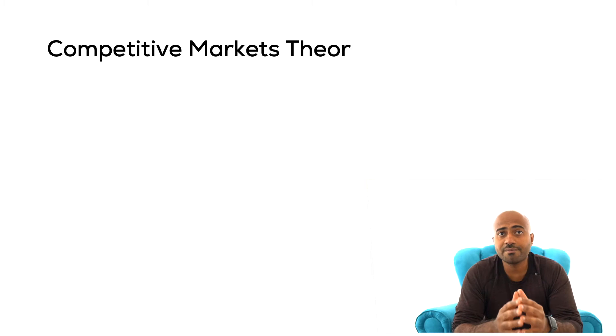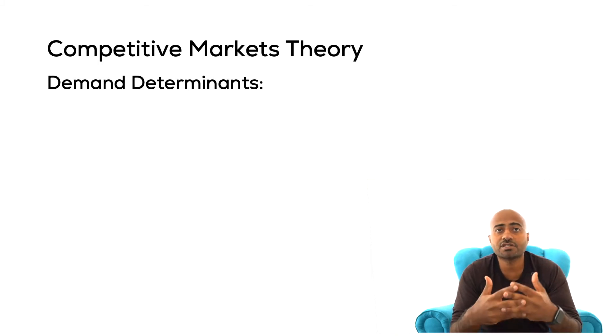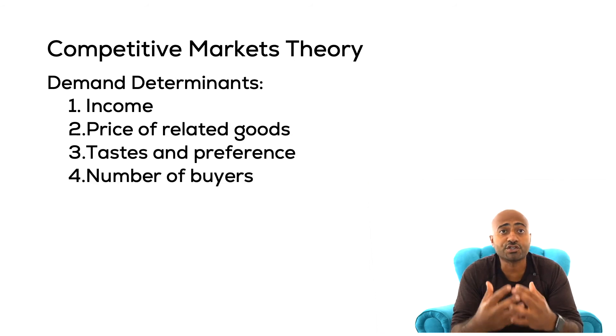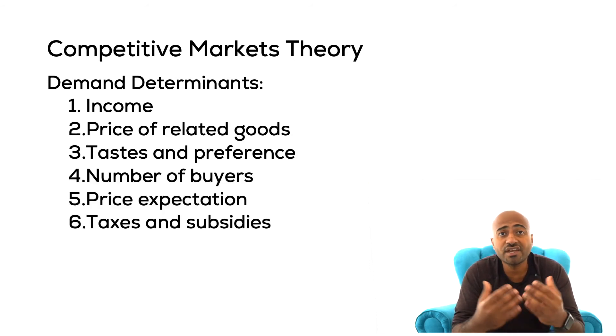And we will refer to them as demanders and suppliers or demand and supply. Demanders' willingness to buy will be influenced and can be changed based on their income, prices of related goods, their taste and preferences, the number of other buyers in the market, the expectation of future prices, and then also on taxes and subsidies on that good.